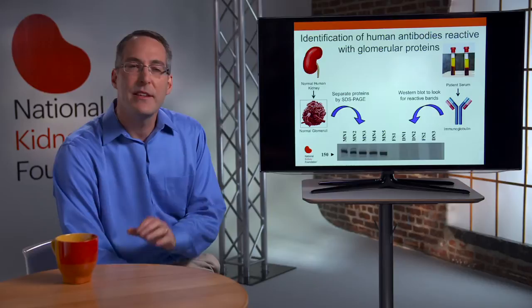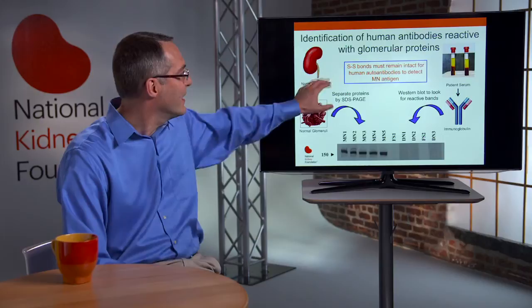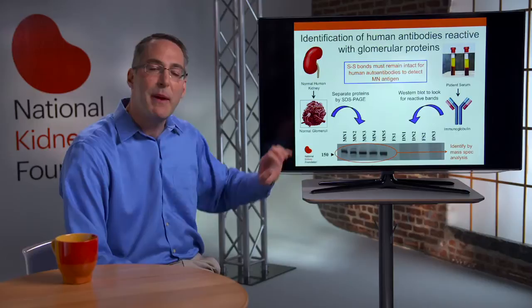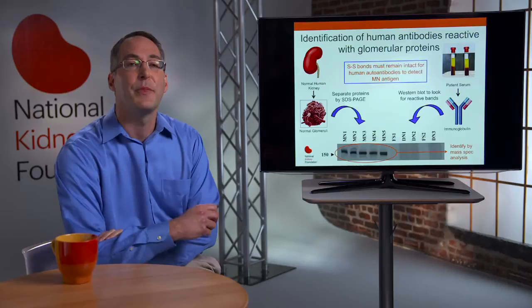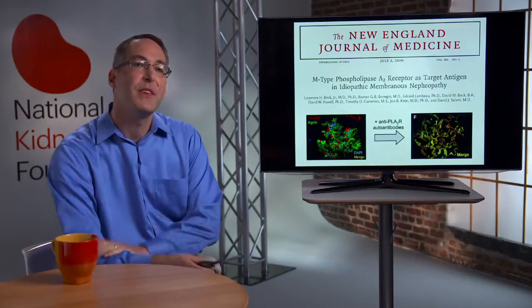An important step in our technique was leaving the disulfide bonds in these proteins intact, because the human autoantibodies don't react with a protein when the disulfide bonds are reduced. We cut out this band, sent it to our collaborators at the University of Louisville, and ultimately identified this protein as the phospholipase A2 receptor — PLA2R — a protein we hadn't really heard of before. We turned to our collaborator Gerard Lambeau in France, who sent us some of this protein, and we realized we were on the right track of discovering the human antigen.